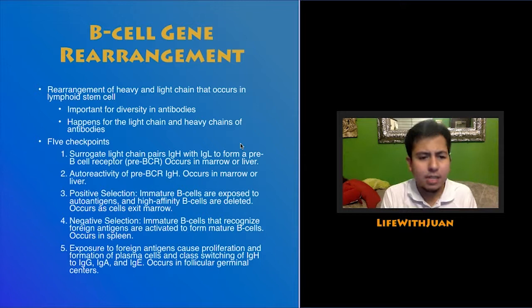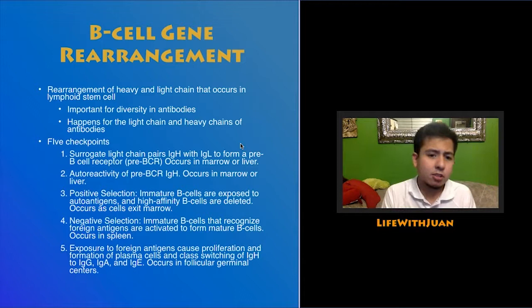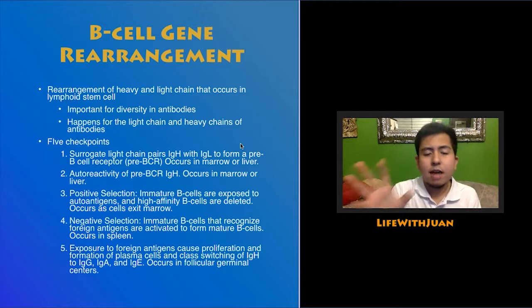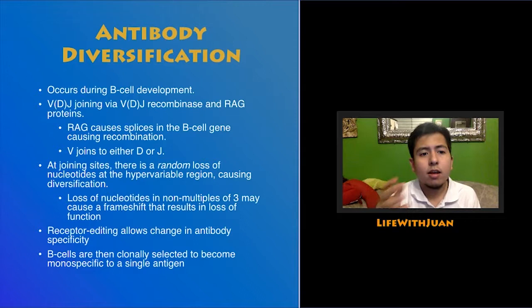Once circulating in the serum, exposure of B cells to foreign antigen causes B cell proliferation and formation of plasma cells. The surrogate light chain pair IgH transforms into IgG, IgA, or IgE — the later forms of antibodies produced by plasma cells, which don't form in unstimulated B cells. This happens in your lymph nodes, particularly in the follicular centers.